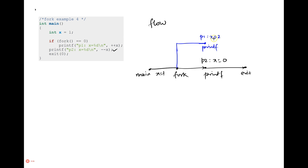After the child's if-statement, it comes out and does another printf. This time it prints 'p2 x equals 1' — because x is 2 from the pre-increment, and a pre-decrement brings it back to 1. The child then exits.